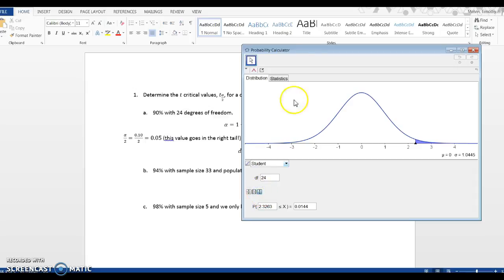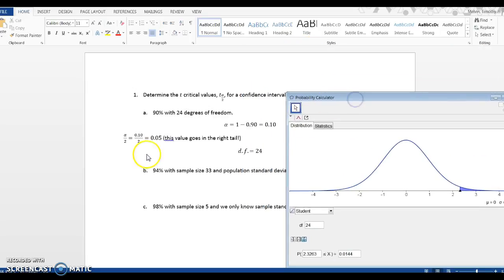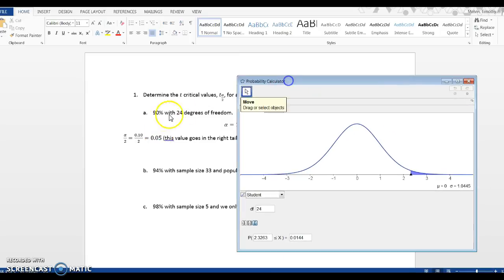On the right side, the right tail, I want to enter 0.05. Alpha over 2 goes inside the equals box: 0.05, click on enter.